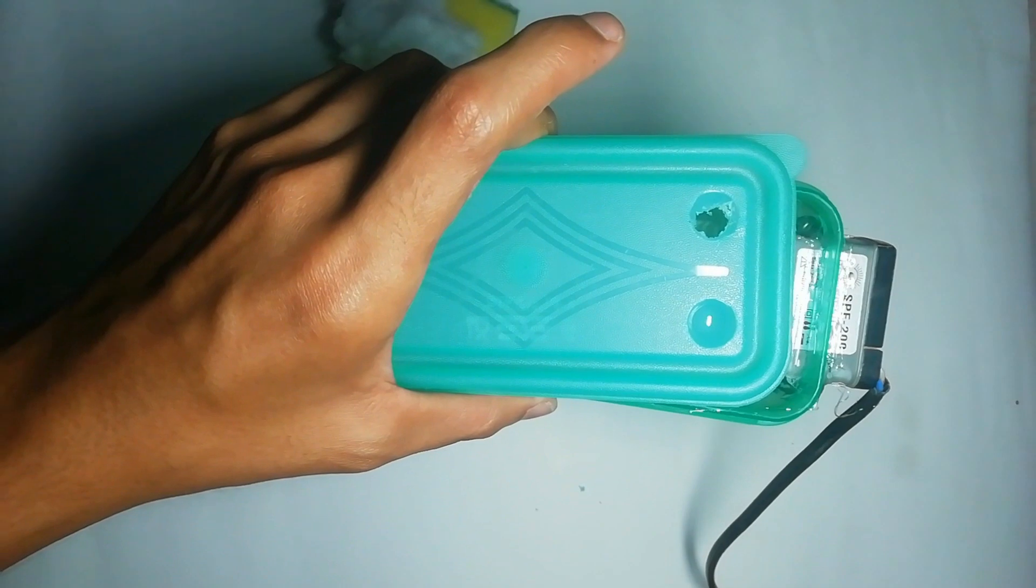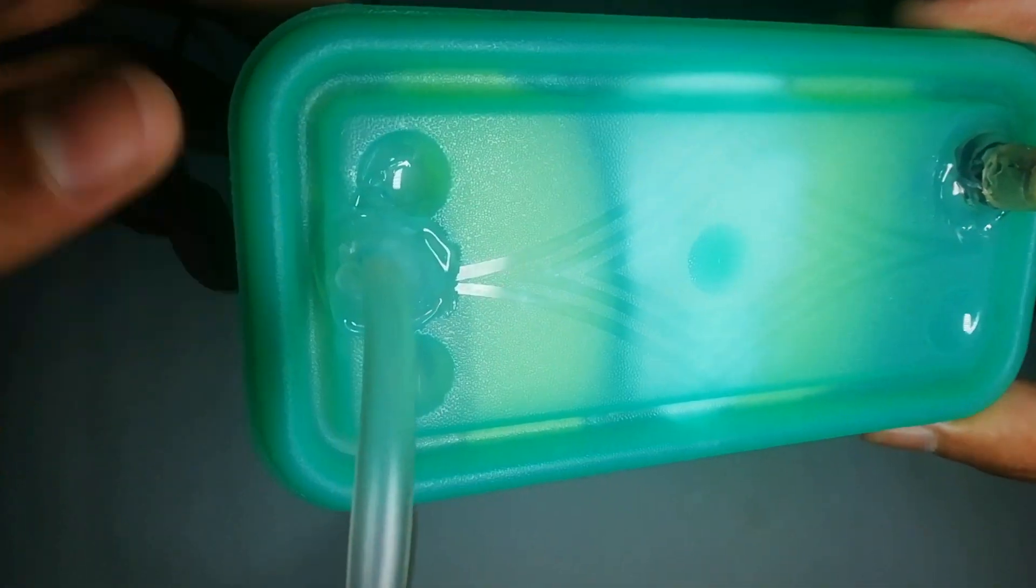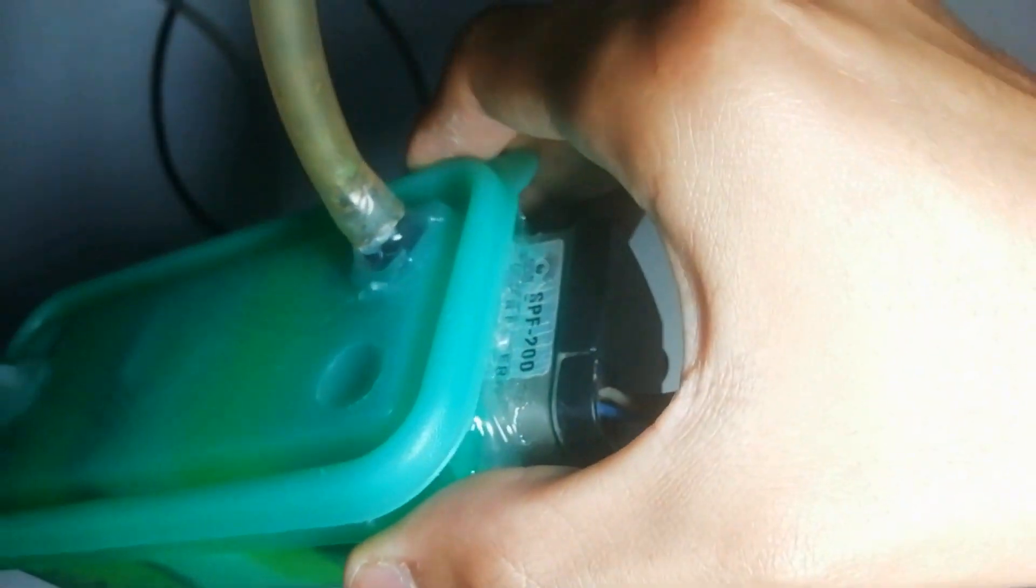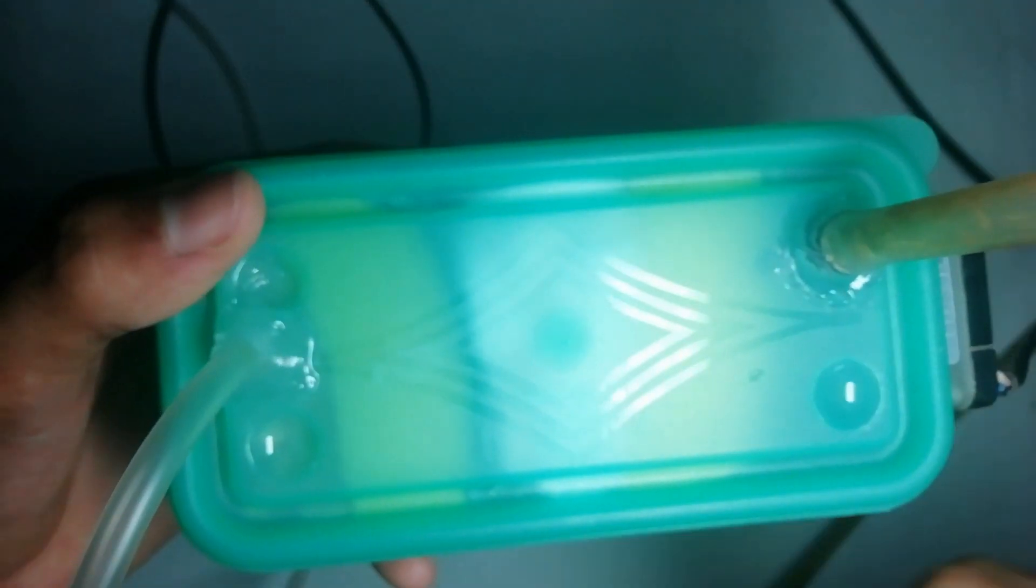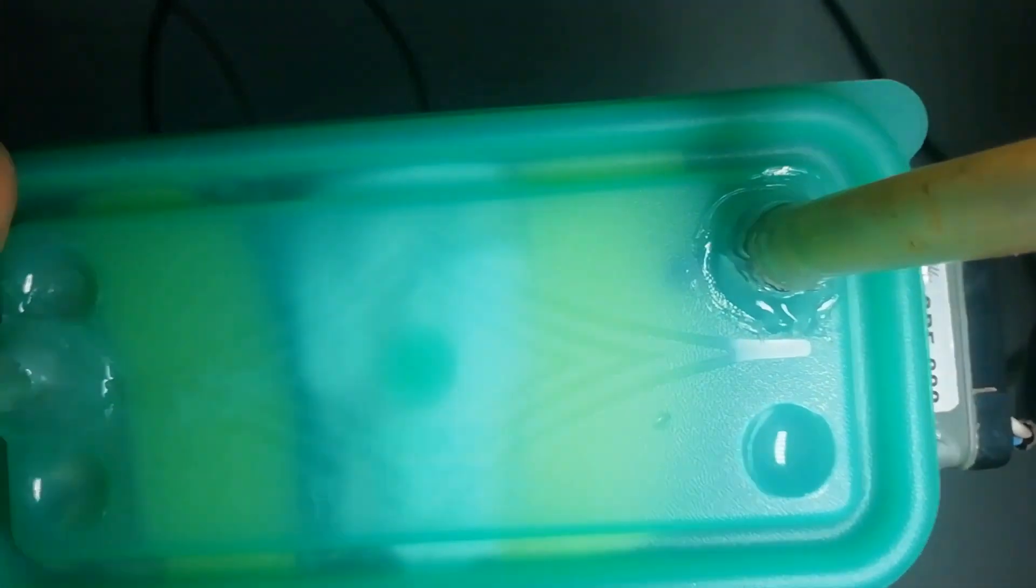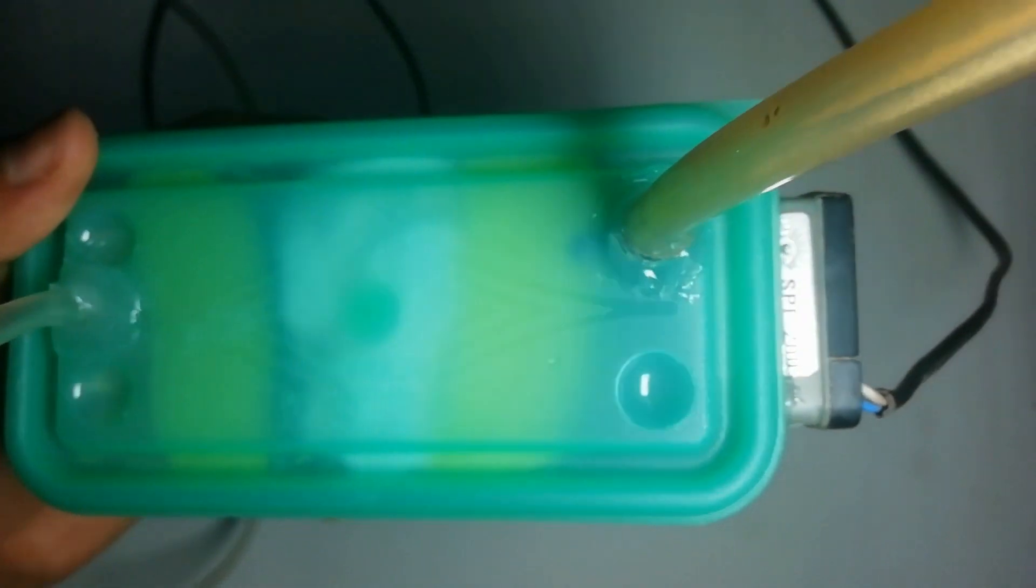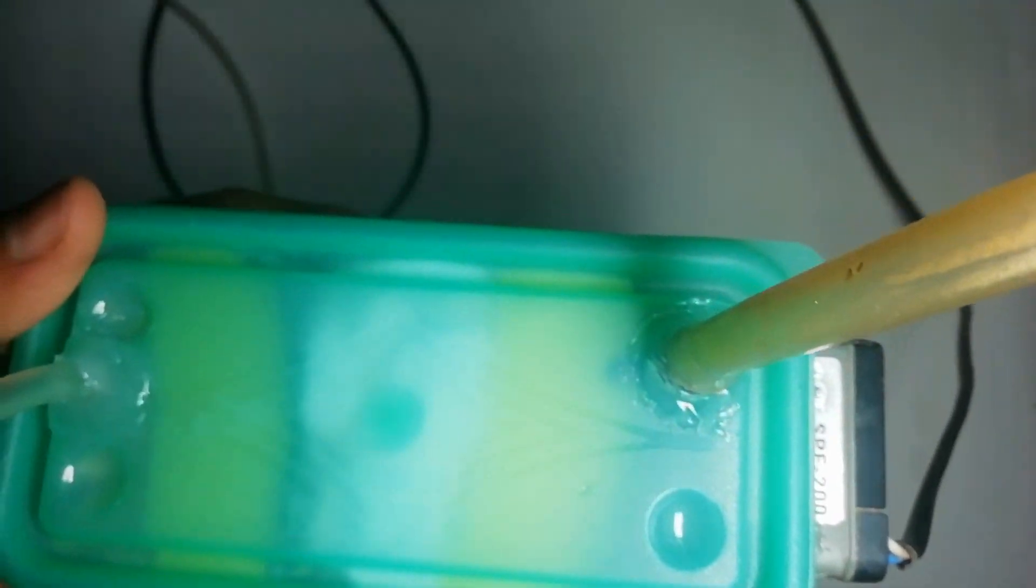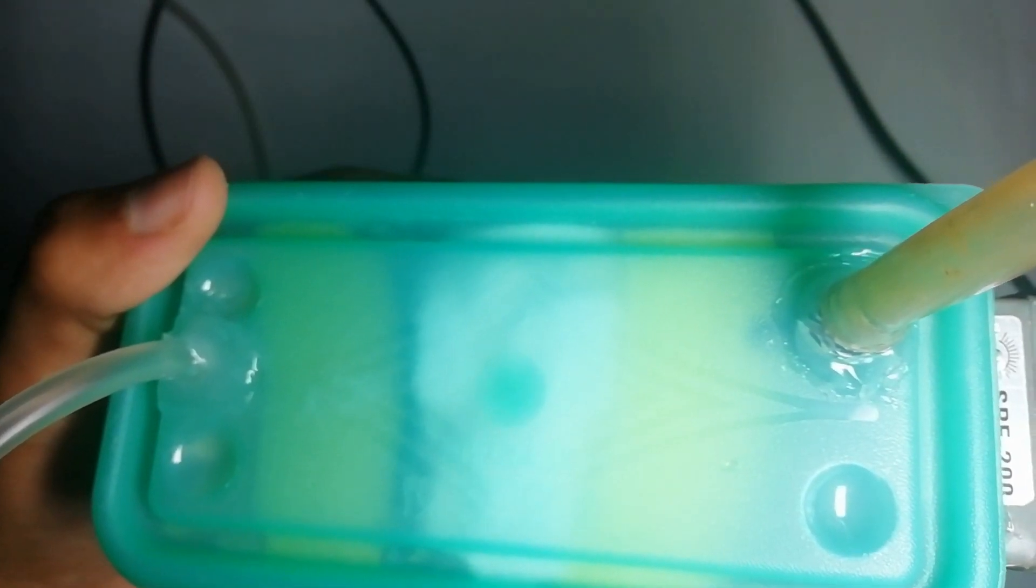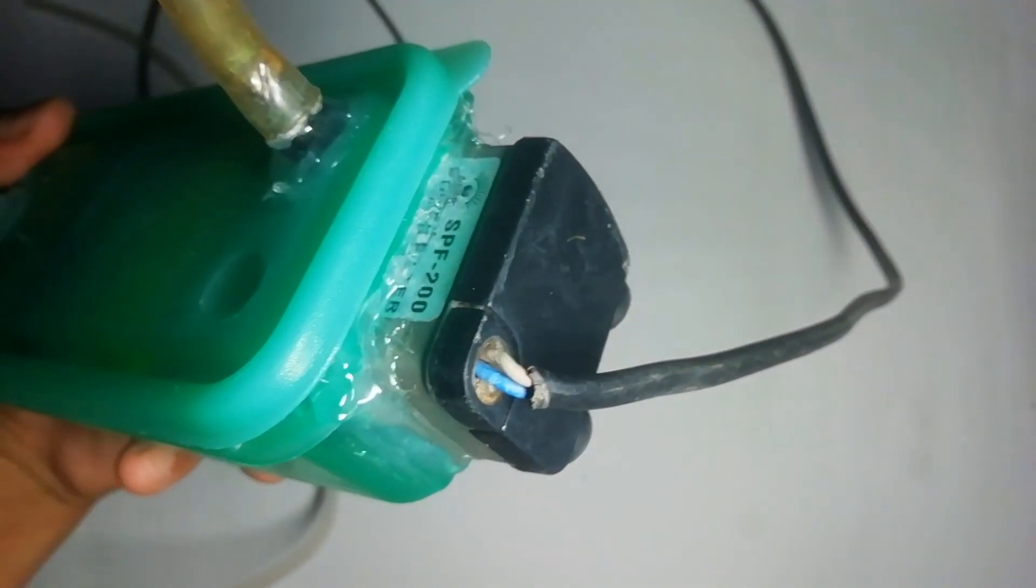Pues bueno amigos, ya quedó el filtro. Como pueden ver ya todo bien sellado, todo con silicón caliente. La bomba, todas las perforaciones que hicimos ya están bien selladas. Y si ustedes tienen cola loca o algún otro pegamento más resistente, pónganselo con ese pegamento amigos. Silicón no es tan resistente como los demás materiales para pegar. El que sí está bien es el silicón para cristales con el que hacen los acuarios, ese sí quedaría muy muy bien pero lamentablemente no lo tengo. Llegó la hora de probarlo.